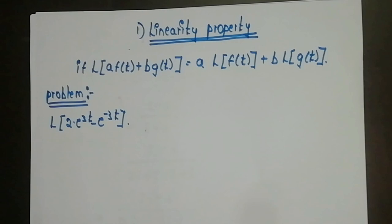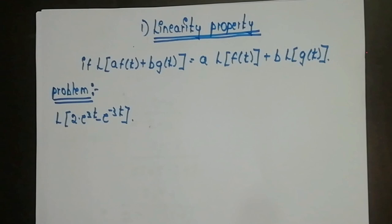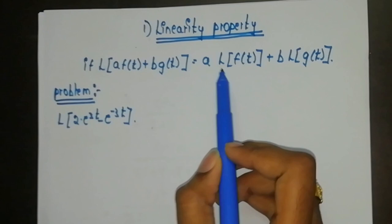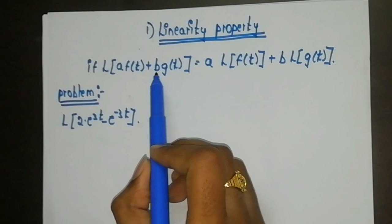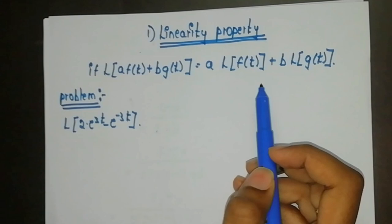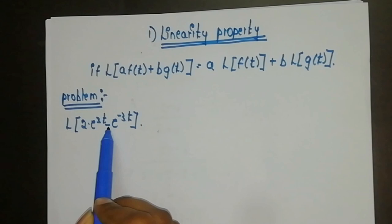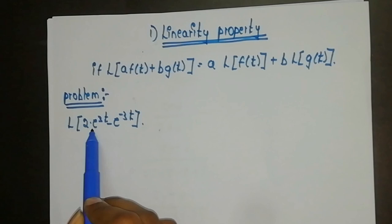Coming to the first model of Laplace transform, that is linearity property. The formula of linearity property is: L{a·f(t) + b·g(t)} = a·L{f(t)} + b·L{g(t)}, where constants multiply through. Let us do a problem on this. The given problem is Laplace of 2·(e^(3t) − e^(−3t)). There is no additional constant multiplied here.